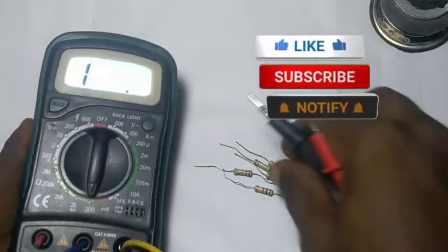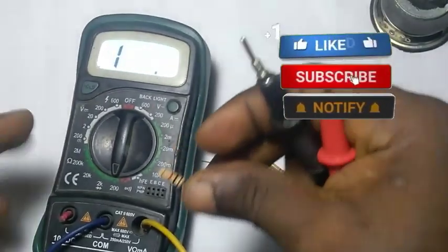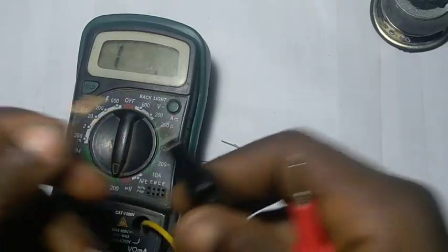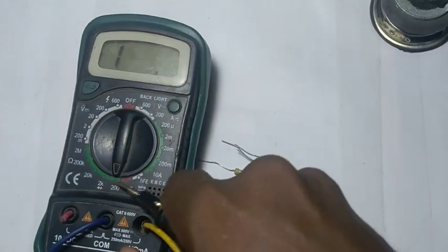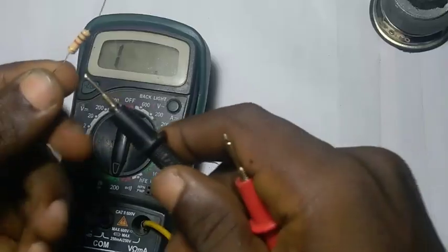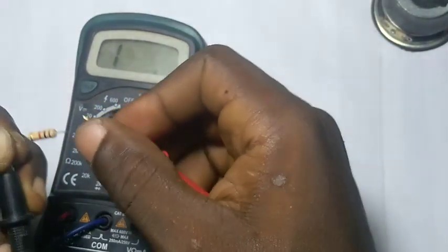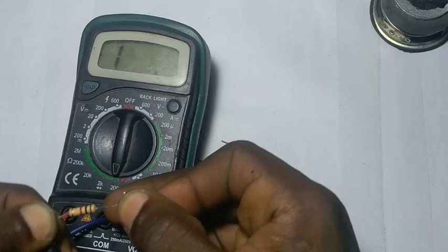Let's start with the first one we have here. Just watch the multimeter and watch the process. Now we'll be starting with the least because we are not sure of the exact value. So just touch, mind you, no polarity. Touch for the first one.